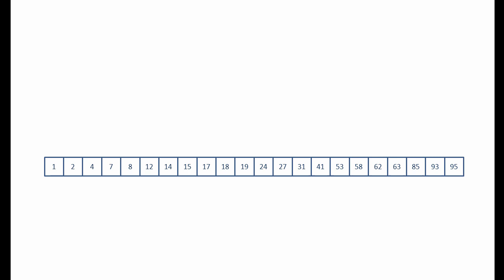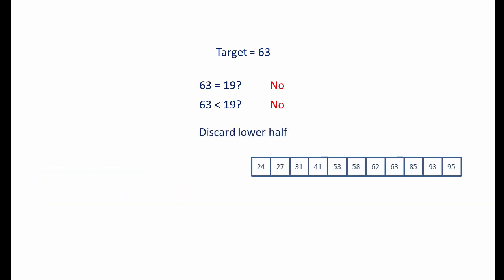Here I have a list. Notice that the data is in order. Our target is 63. We want to know if 63 is in the list. So we identify the middle and we ask the question: is 63 equal to the middle value? If the answer is no, we ask: is 63 less than the middle value? If the answer to this question is no, we know that the value we're looking for is in the top half of the list, so we discard the lower half.